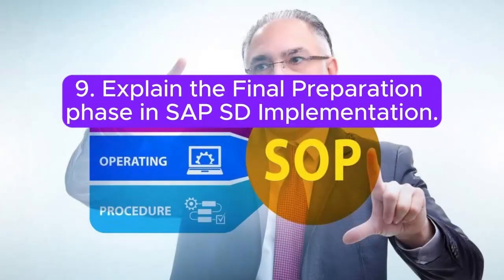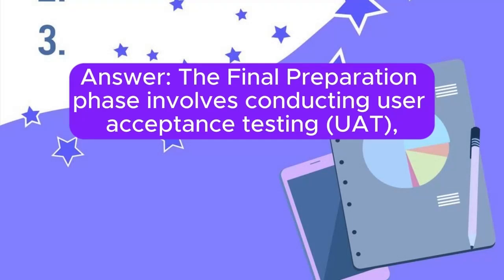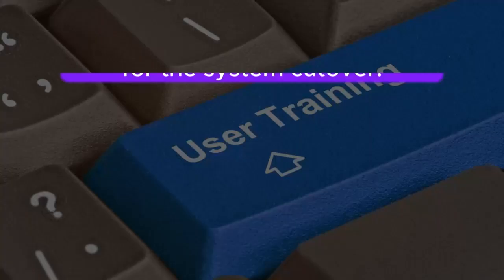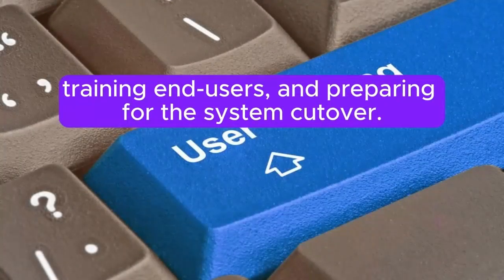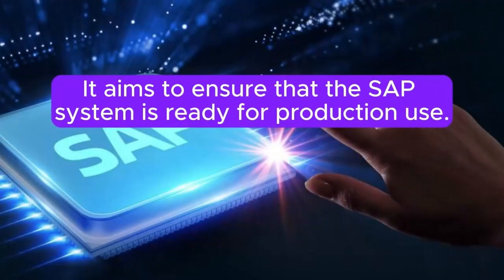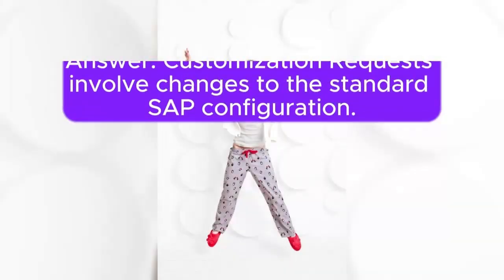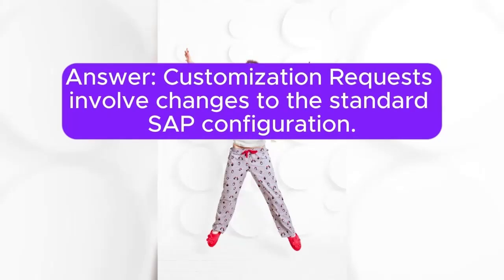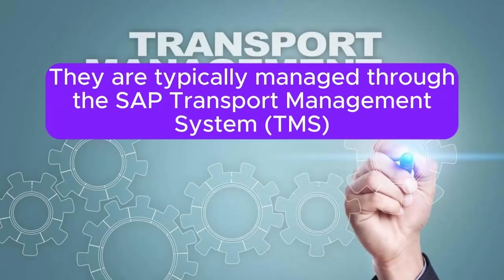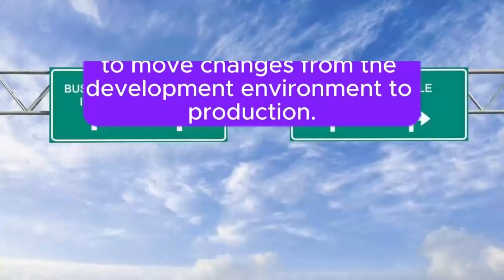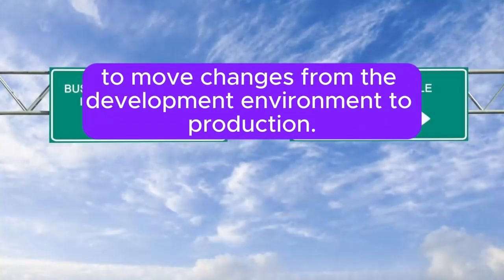Question 9: Explain the final preparation phase in SAP SD implementation. Answer: The final preparation phase involves conducting user acceptance testing (UAT), training end-users, and preparing for the system cutover. It aims to ensure that the SAP system is ready for production use. Question 10: How do you handle customization requests during the realization phase? Answer: Customization requests involve changes to the standard SAP configuration. They are typically managed through the SAP Transport Management System (TMS) to move changes from the development environment to production.